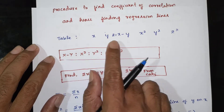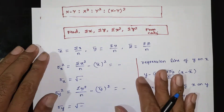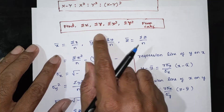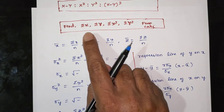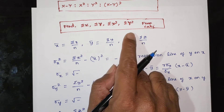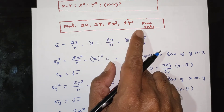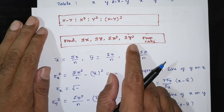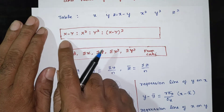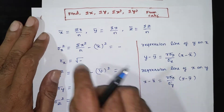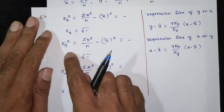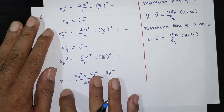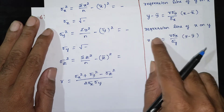First, set up a table with columns: x, y, z = x minus y, x square, y square, z square. Then compute: summation of x, y, x square, y square. Next, find x bar, y bar, z bar, sigma x square, sigma x, sigma y square, sigma y, sigma z square, and sigma z. From these, derive the regression line of y on x and the regression line of x on y.